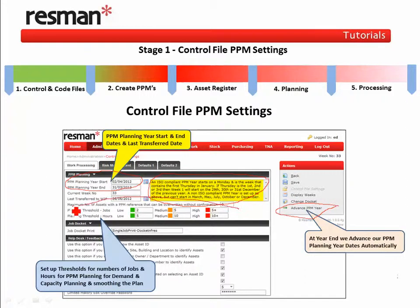I'm now going to highlight this traffic light colour coding, and this is where we set up our target planning thresholds as a number of jobs and hours, which is used optionally for demand and capacity planning. As our PPMs go into the annual plan, we can easily smooth the plan to suit our resources.